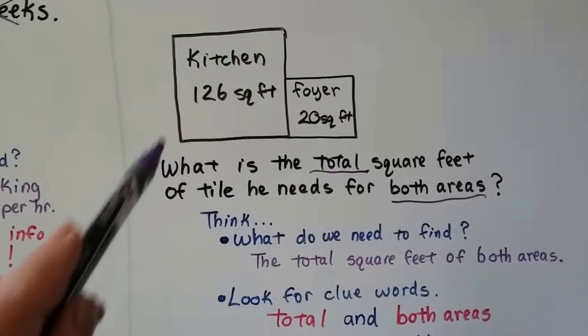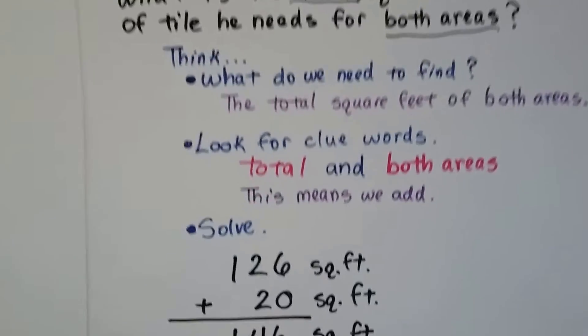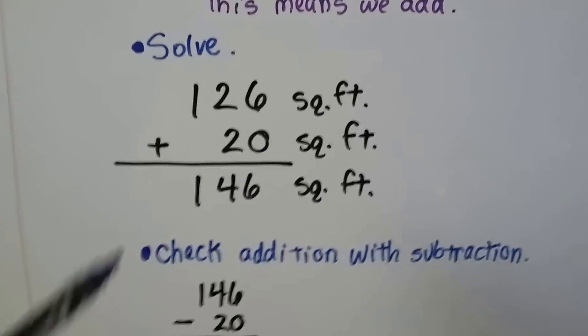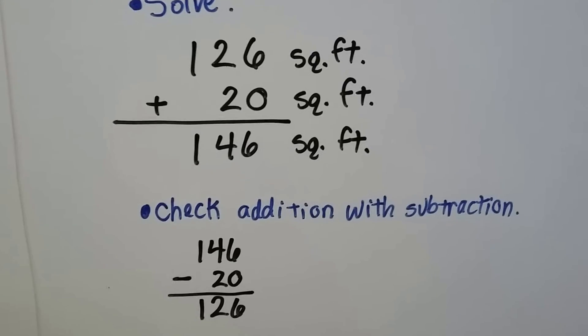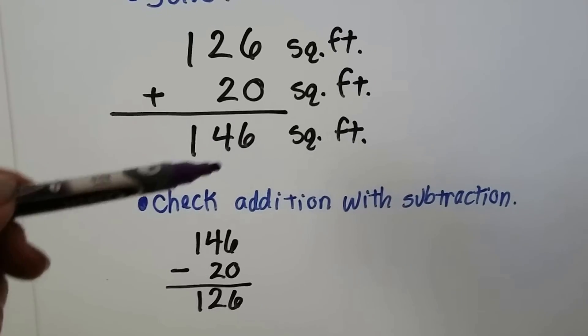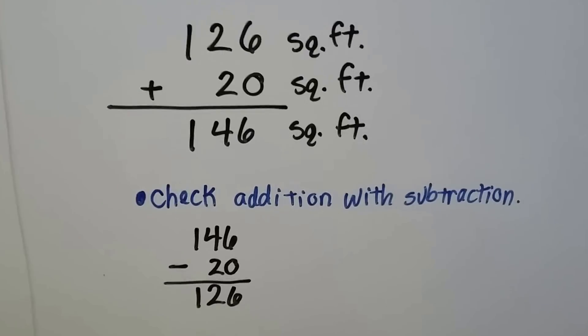And then we solve it. So we're going to total them. We're going to add them. 126 plus 20. We could probably even do that in mental math, couldn't we? It's 146. We can check the addition with subtraction. We take the 146 and subtract the 20, and if we get 126, we know we did it right.